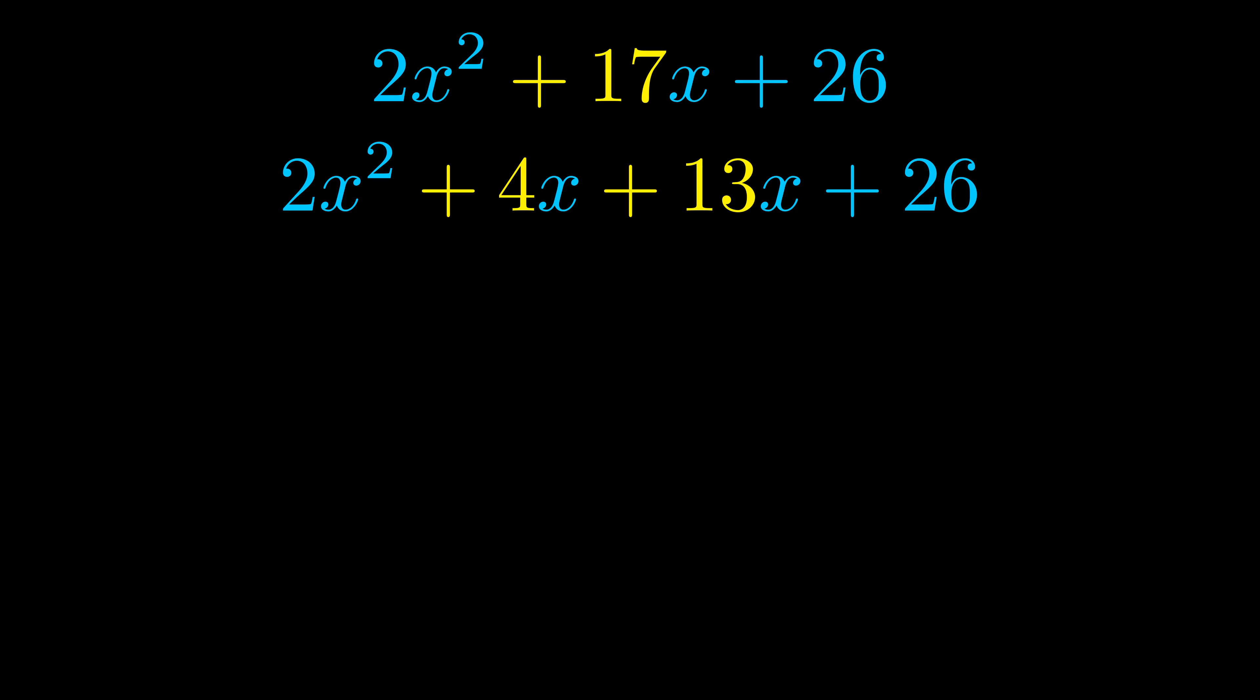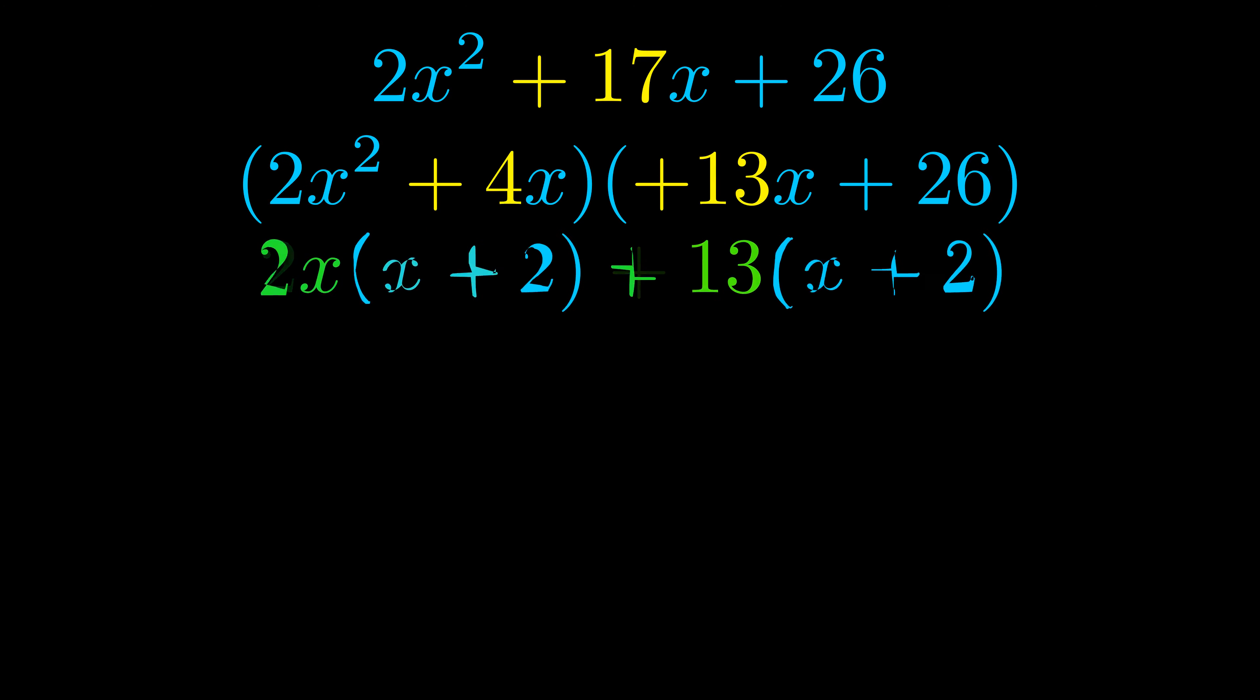Once we've done this we go ahead and we put parentheses around the first term and the last term and we do that so that we can take the greatest common factor out of both terms. We can see the greatest common factor is now outside in green.